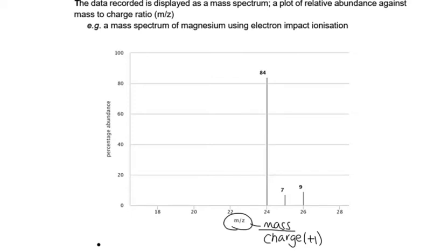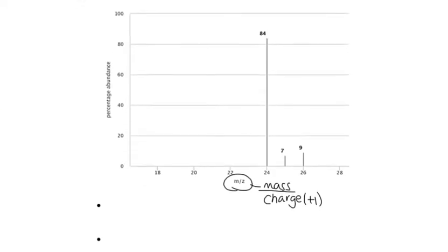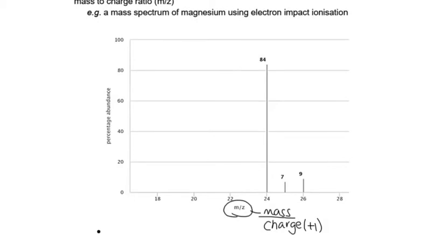Up the side we've got percentage abundance. Remember that when the sample hit our detector it generated a current and the bigger the current the bigger the abundance was. We can see here that this particular peak at a mass to charge ratio of 24 was 84% of our sample, much more abundant than everything else. These are percentages so we know that these numbers will add up to 100. So what can we tell from this mass spectrum of magnesium?